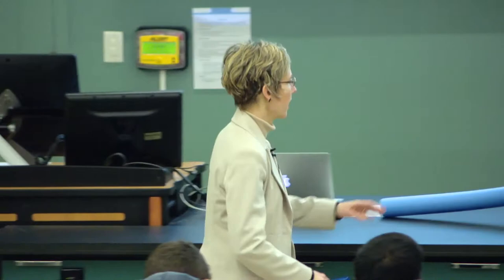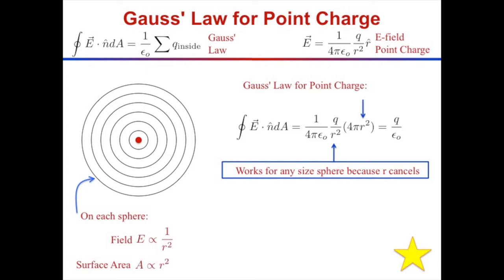Gauss's Law is this statement: electric flux through a closed surface equals 1 over epsilon naught times the sum of the charges that are enclosed. The little circle on the integral means a closed surface.